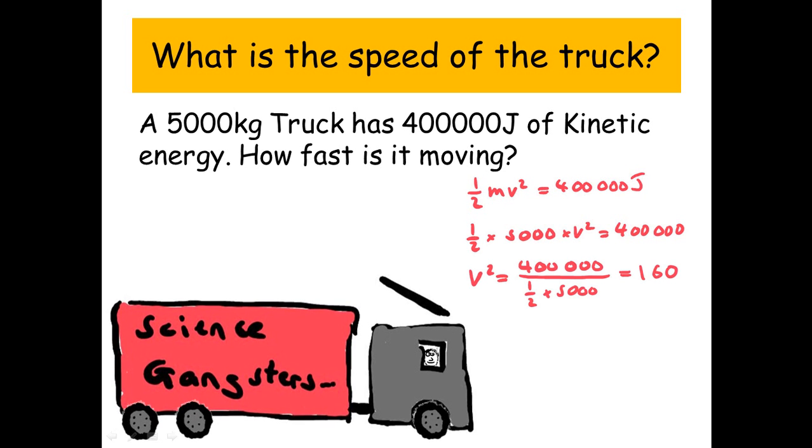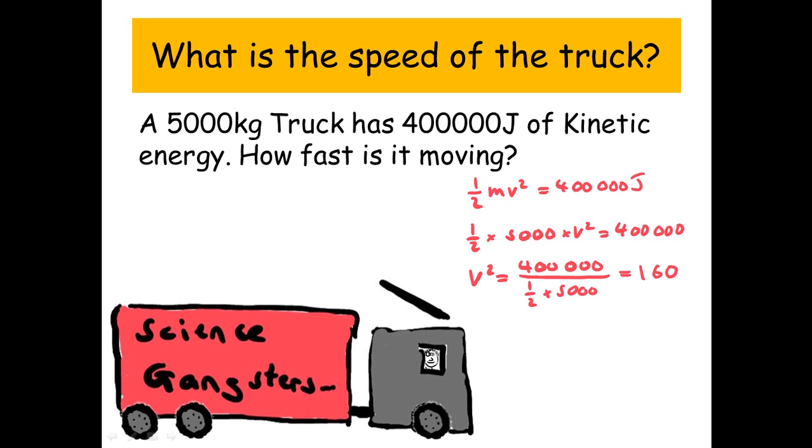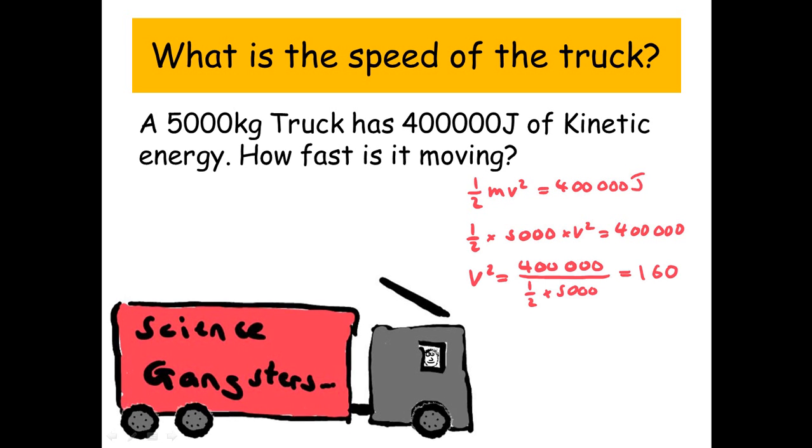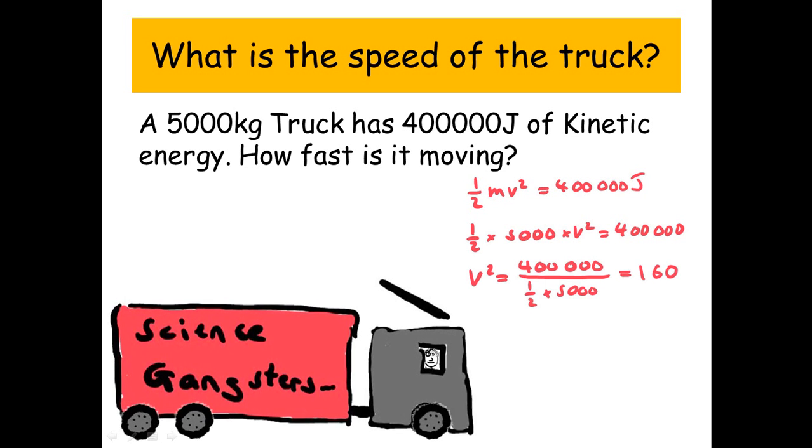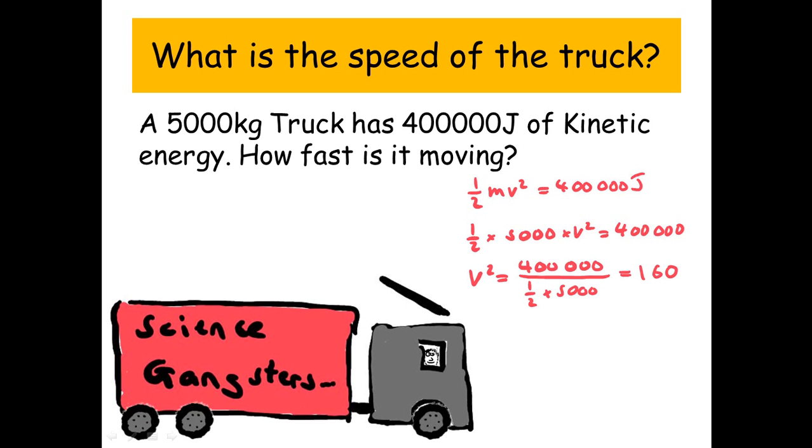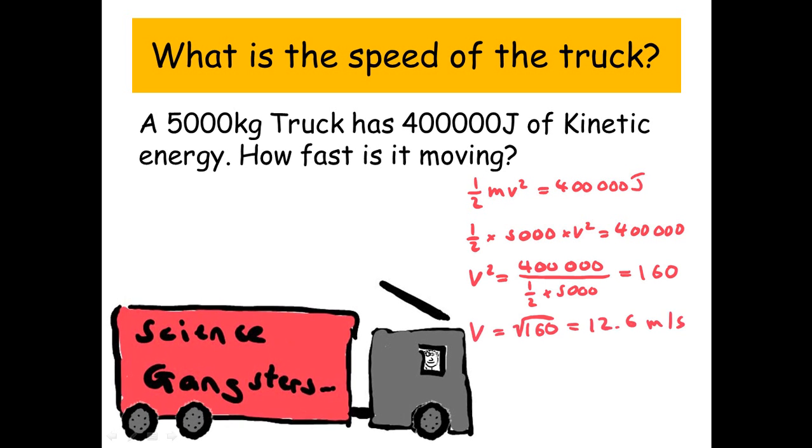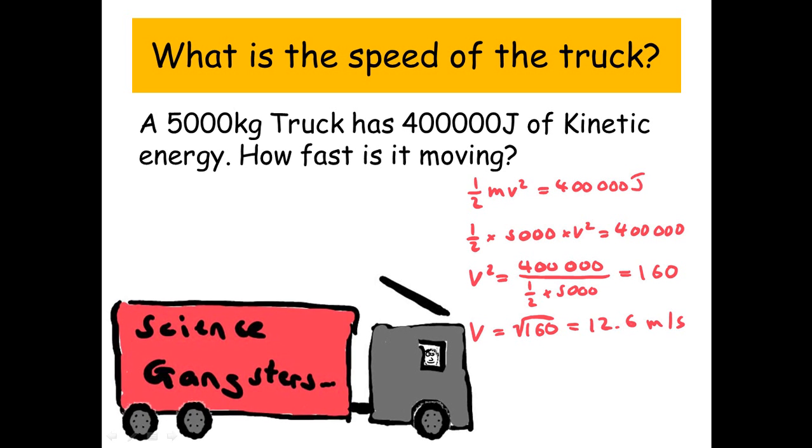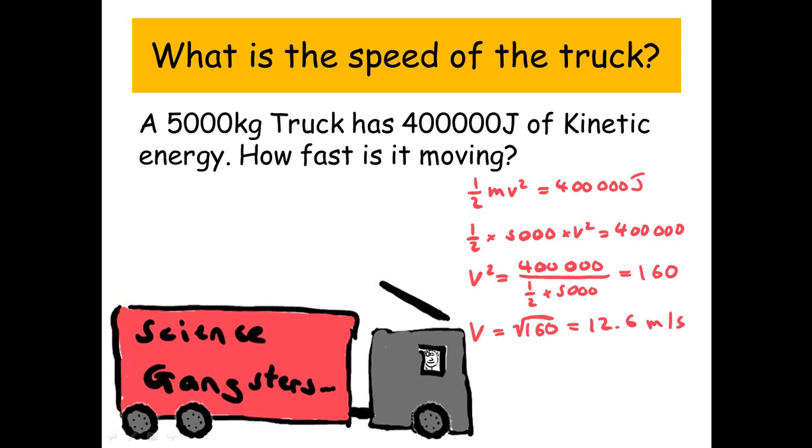Now let's move the half and the 5,000 over to the other side, so we're dividing. We get v squared equals 400,000 divided by a half times 5,000, which is 160. If we square root that answer, we find our velocity, which is 12.6 meters per second.